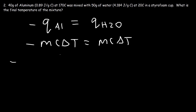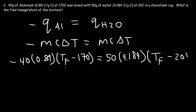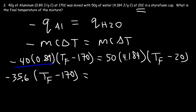The mass of the aluminum metal is 40, the specific heat capacity is 0.89, and delta T is the final temperature minus the initial temperature of 170. The mass of water is 50, the specific heat capacity is 4.184, and delta T is the final temperature minus the initial temperature of 20. Now multiply: negative 40 times 0.89 is negative 35.6, and 50 times 4.184 is 209.2.